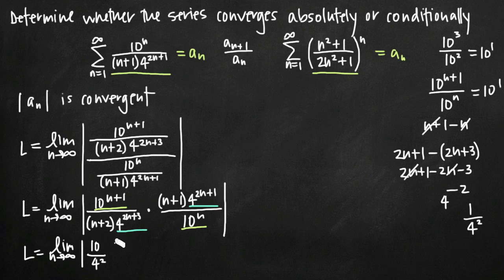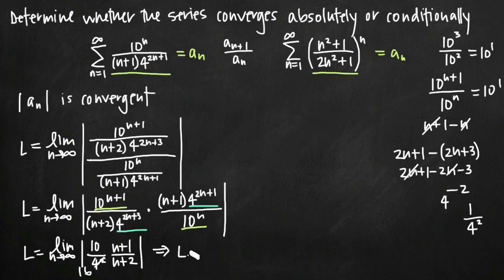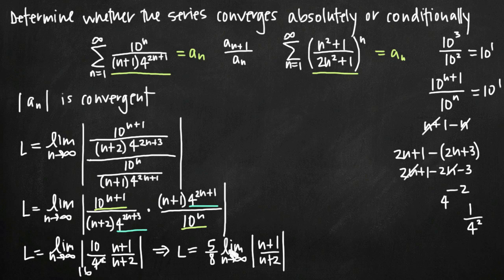That leaves us with n plus 1 over n plus 2, which we can't simplify further. We can pull out 10 over 4 squared, which is 10 over 16, or 5 over 8 when reduced. So we have l equals 5/8 times the limit as n goes to infinity of the absolute value of n plus 1 over n plus 2.